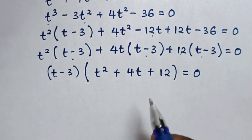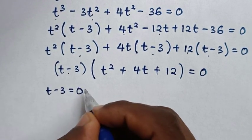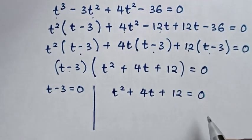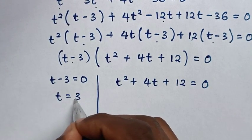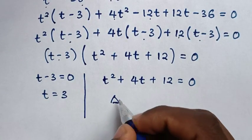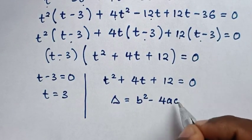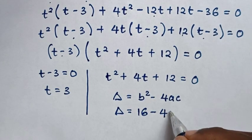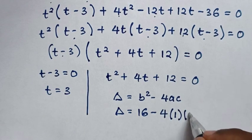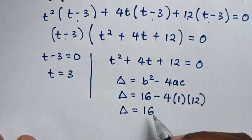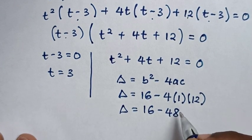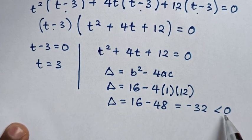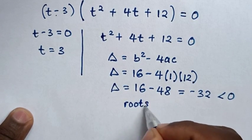From here we have two solutions. The first solution is t minus 3 is equal to 0, giving t is equal to 3. The second solution is t square plus 4t plus 12 is equal to 0. By the discriminant formula, discriminant is equal to b square minus 4ac. So discriminant equals 4 square which is 16 minus 4 times 1 times 12, which is 16 minus 48 equals negative 32. Since this is less than 0, the roots are complex.